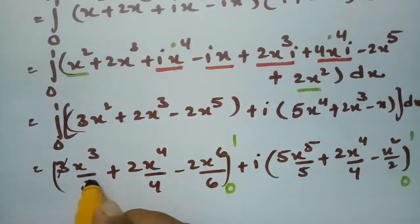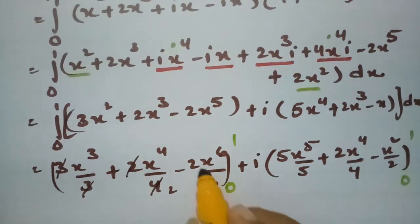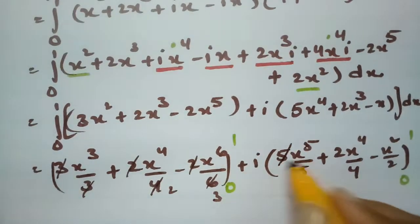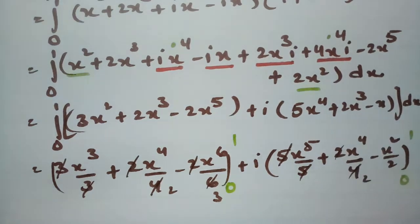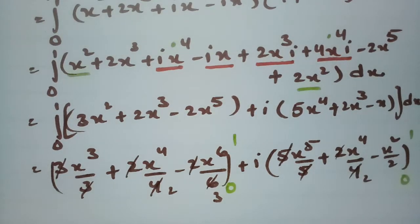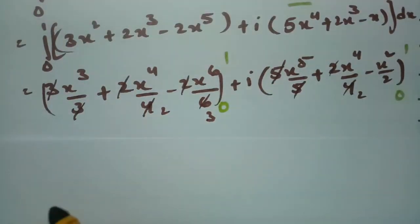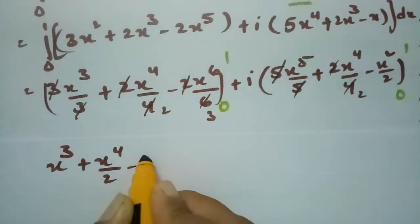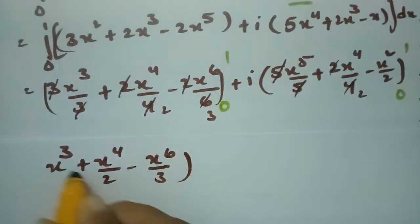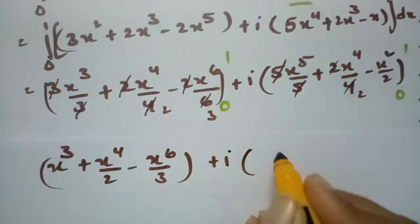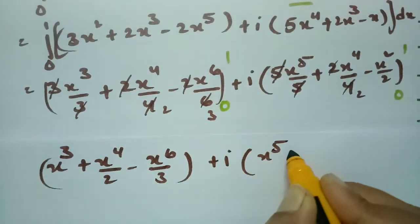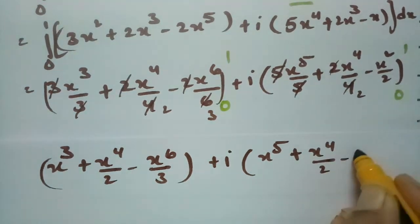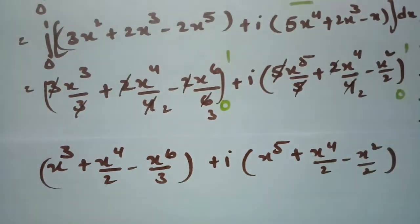Integrating term by term: the real part gives [3x³/3 + 2x⁴/4 − 2x⁶/6] = [x³ + x⁴/2 − x⁶/3] from 0 to 1, which equals 1 + 1/2 − 1/3. The imaginary part gives i[5x⁵/5 + 2x⁴/4 − x²/2] = i[x⁵ + x⁴/2 − x²/2] from 0 to 1, which equals i(1 + 1/2 − 1/2) = i.